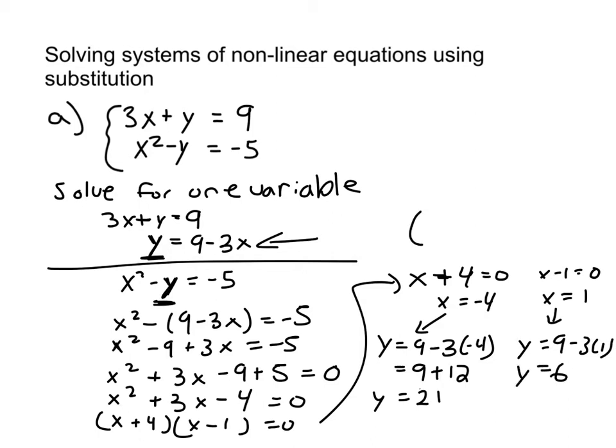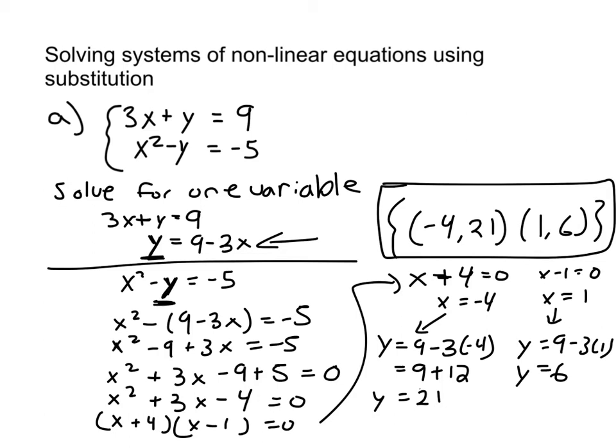So I have two solutions, or two points: negative 4 comma 21 and 1 comma 6. And that's my solution for this system. So there's two points that satisfy this system of nonlinear equations. Let's do one more example.